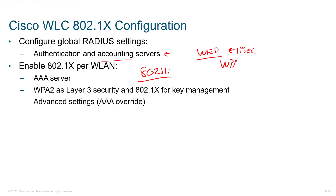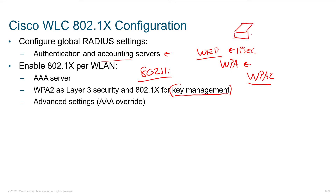Eventually we came out with WPA — Wi-Fi Protected Access — and this was just an early draft of 802.11i. We weren't really quite there yet. WPA2 is when we say that we were there; this is the fix for wireless security. With WPA2, what this did for us is it tied in 802.1x. We've got this concept of a AAA server, and the real magic is the fact that WPA2 is so much better with handling key management.